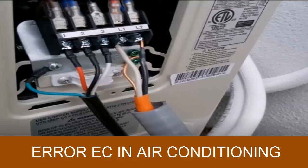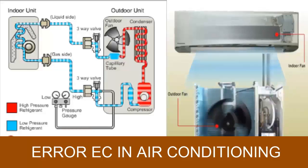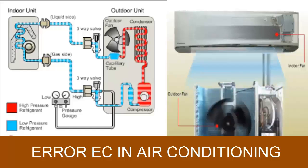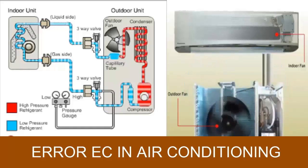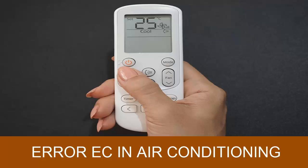How to fix the EC error code? The first step to address this error is to reset the air conditioner so it can restart. When this error occurs, the system shuts down, and resetting it requires some checks to identify the problem.